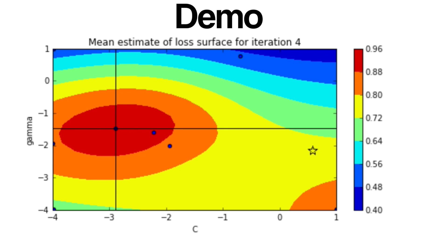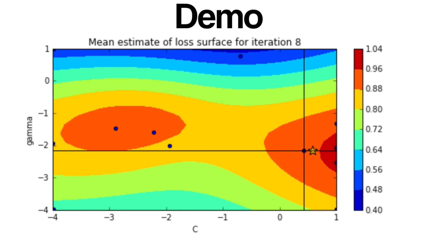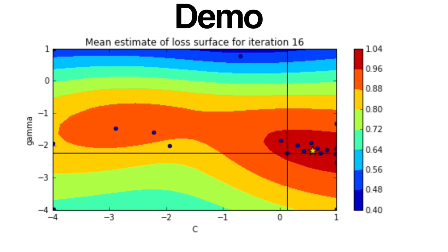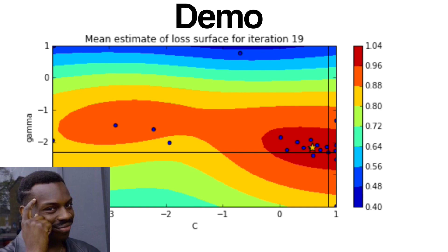Initially, the algorithm will explore the parameter space, but it quickly discovers the region with best performance and samples points in that region. Much smarter strategy, right?